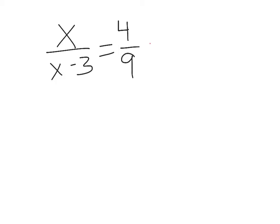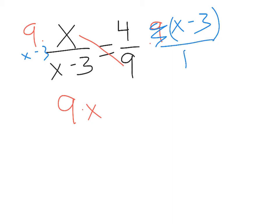If I multiplied by 9, it would end up over here with the x. So I can really just do 9 times x. If I multiplied both sides by x minus 3, it's going to end up here on the right hand side of the equation, and I would be multiplying it by the 4. So I can just cross multiply the 4 times the x minus 3.